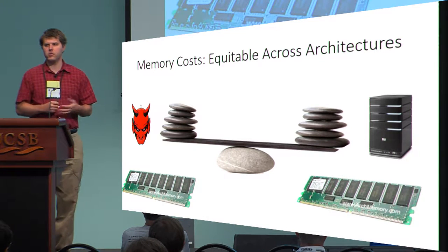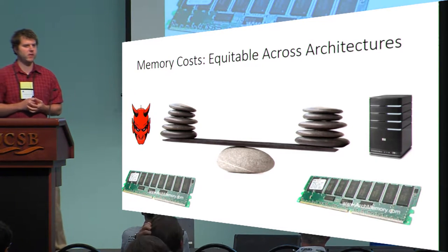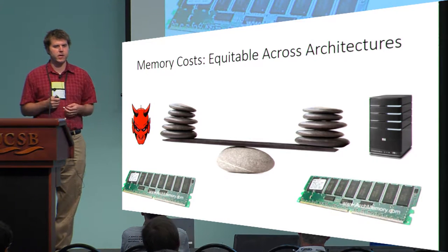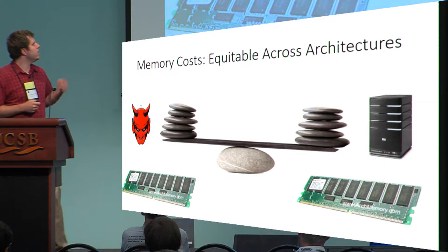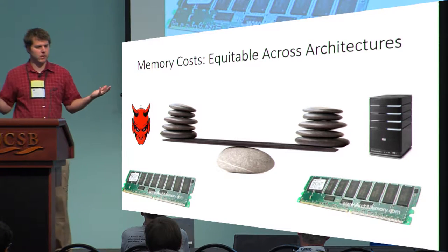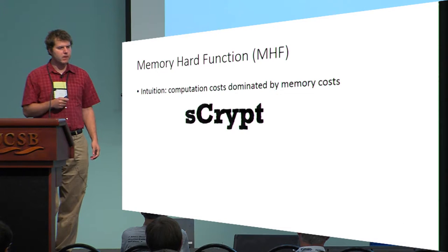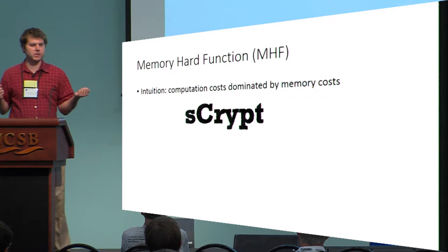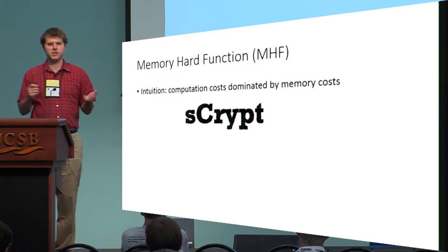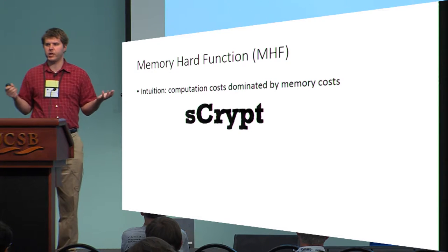The basic goal of a memory hard function is to develop a moderately hard function with equitable cost. The key observation here is that memory costs tend to be equitable across different computer architectures. So the intuition behind a memory hard function is basically a function for which computation costs are dominated by memory costs.